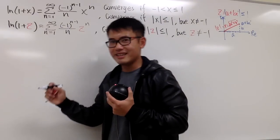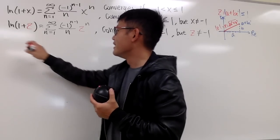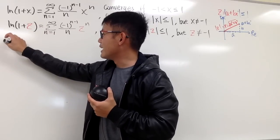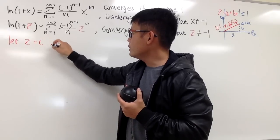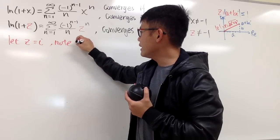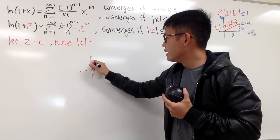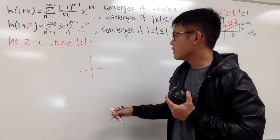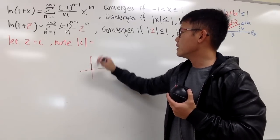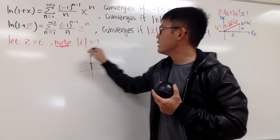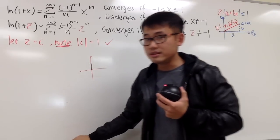Let z equal i. Notice that the absolute value of i is 1 — it's a distance of 1 from the origin — so this fits within the interval of convergence. This means plugging z equals i into the series is legitimate and will converge.